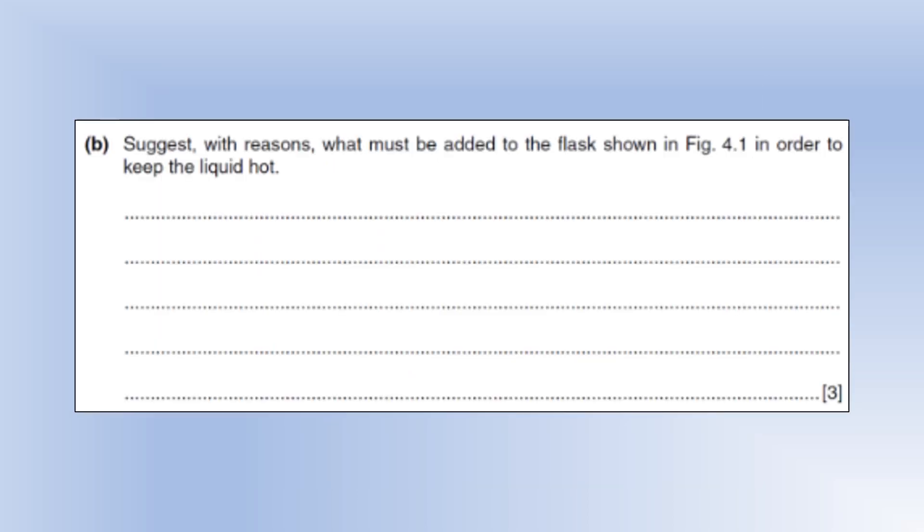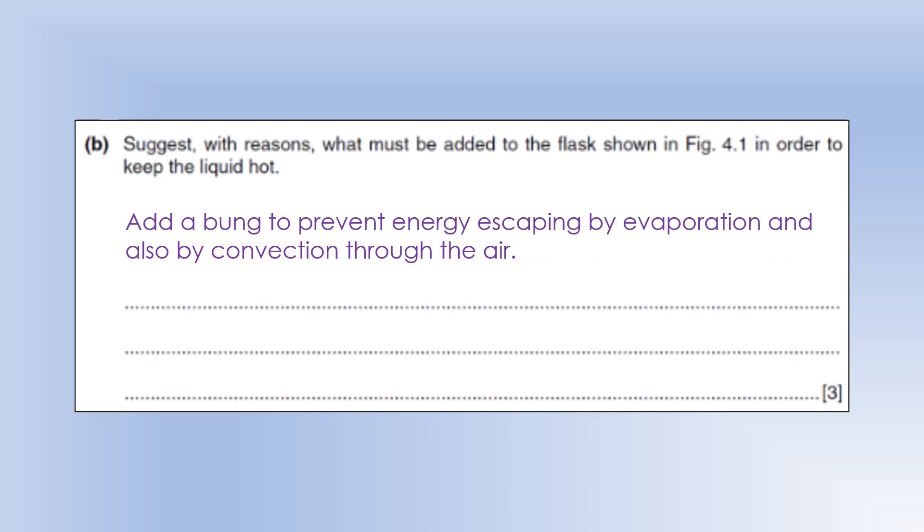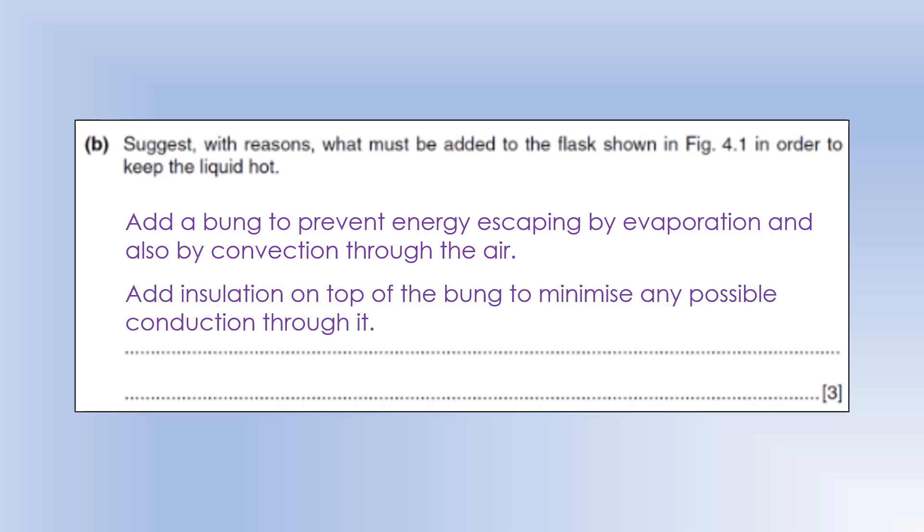So suggest with reasons what must be added to the flask in order to keep the liquid hot. As I said, there is currently an opening at the top, so you'd want to put a bung or a stopper or a lid on, because that would stop the processes of convection and evaporation leading to energy loss. And if we're going to do that, we might want to put insulation on top of the bung, because it's a solid, so that would allow conduction. So we might want an insulator to prevent energy loss by conduction.